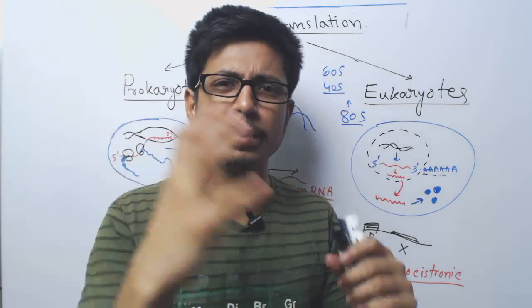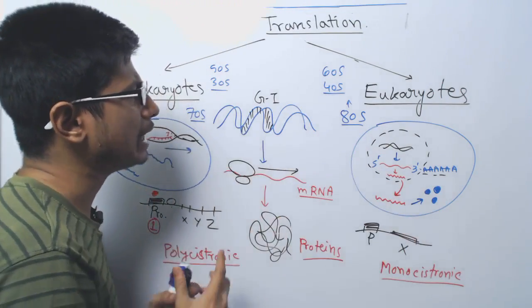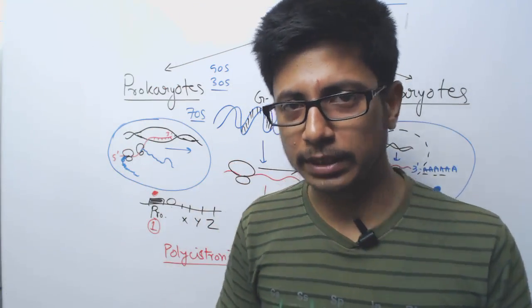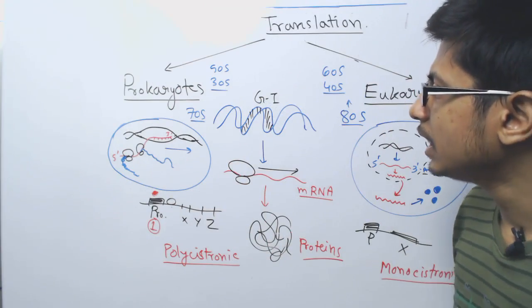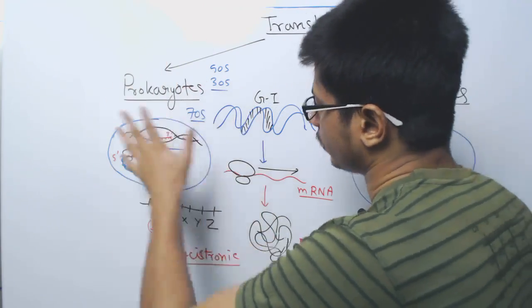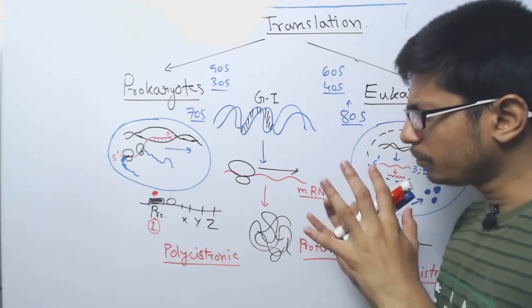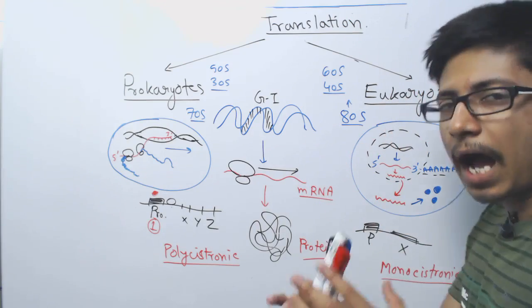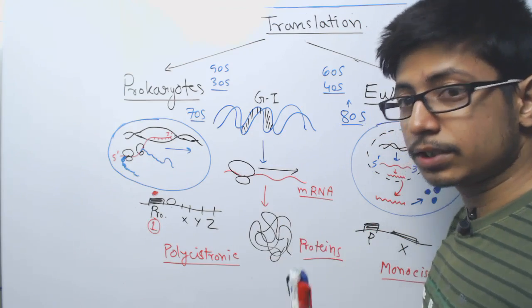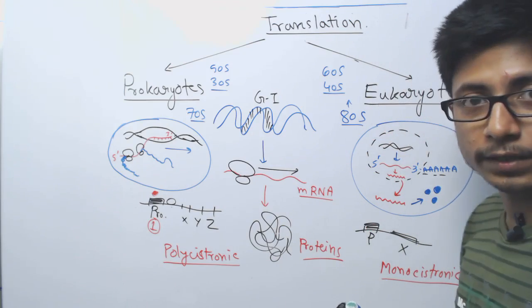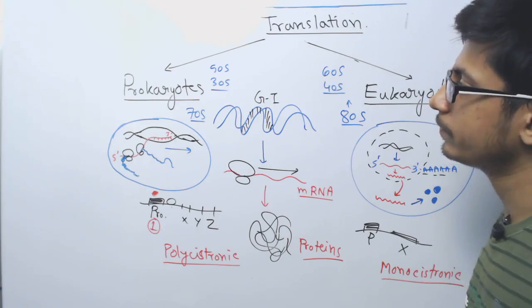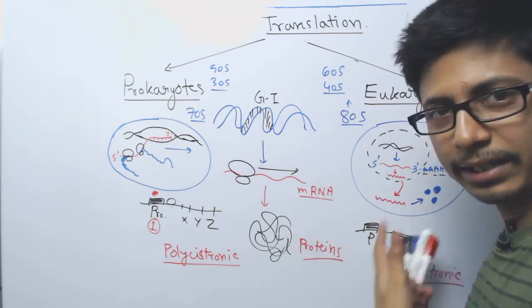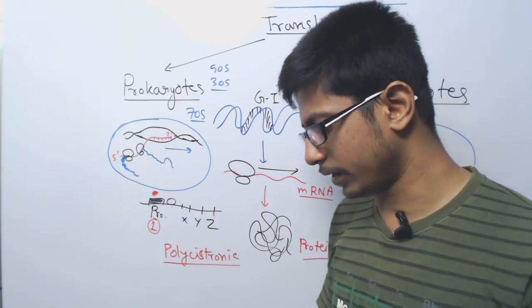This S means the Svedberg unit to measure their density and molecular weight depending upon how they sediment. Sedimentation coefficient mainly depending upon if you spin them, when and how they are sedimenting. The structure of ribosomes are almost similar, but the rRNA which are the constituents of the structure of the ribosome, those rRNA found in prokaryotes are different than the rRNA found in eukaryotes.